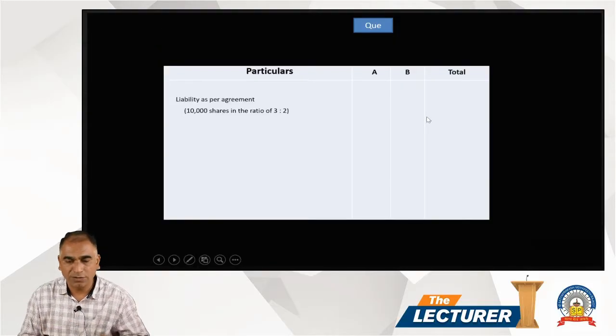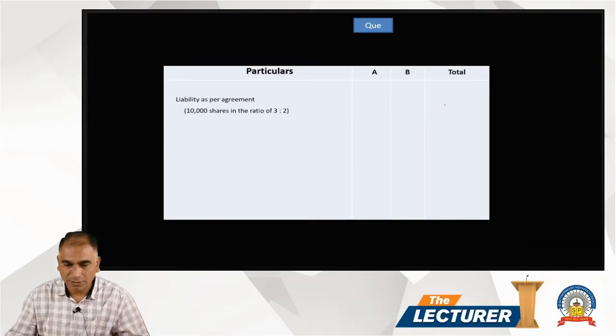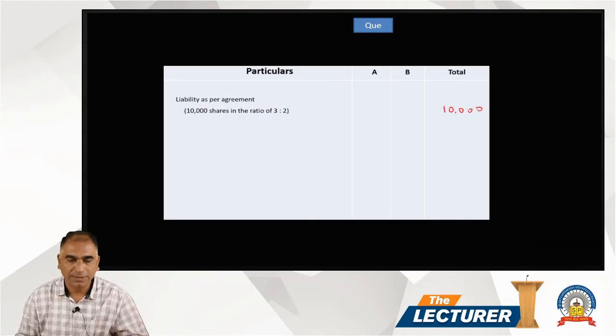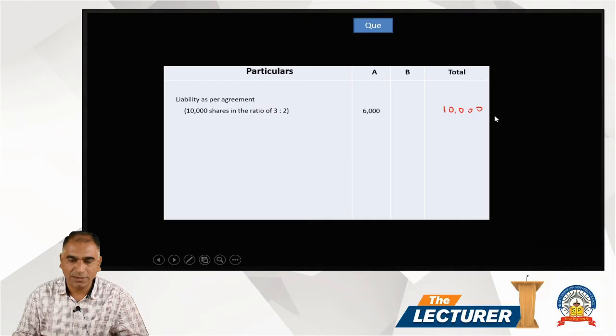Distribute 10,000 shares in the ratio 3:2, so that is A 6,000 and B 4,000. This 10,000 we distribute into 3:2. Less marked applications: A 4,000, B 1,000. So 6 minus 4 equals 2,000.